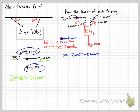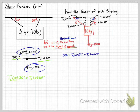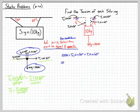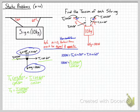We solve the x equation for T2 by dividing both sides by cosine of 30 degrees, giving T2 equals T1 times cosine of 60 degrees divided by cosine of 30 degrees. We substitute this expression for T2 into the y equation: 100 newtons equals T1 times cosine of 60 degrees divided by cosine of 30 degrees, times sine of 30 degrees, plus T1 times sine of 60 degrees.